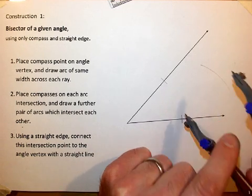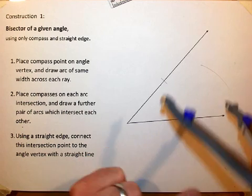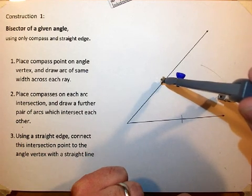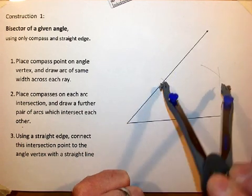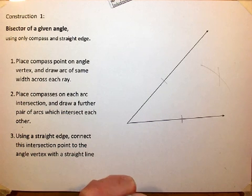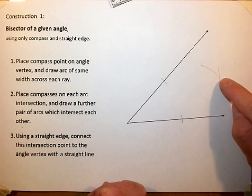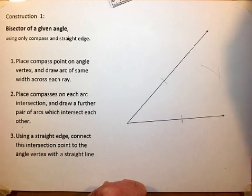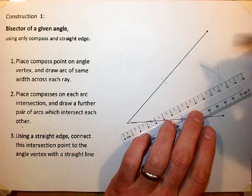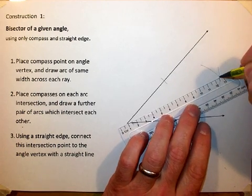We have one arc without changing the width of these compasses. We then draw a second arc. We now have an intersection point which we can now join up with a straight edge to the angle vertex.